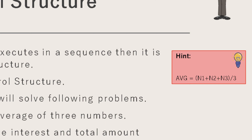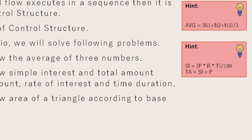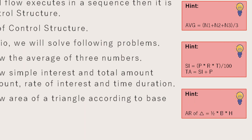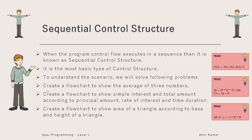I'm providing a few hints: to calculate the average of three numbers, we add them up and divide by three. To calculate simple interest, we multiply principal amount, rate of interest, and time duration, then divide by 100. Adding simple interest to the principal amount gives the total amount. For the area of a triangle, the formula is half into base into height.